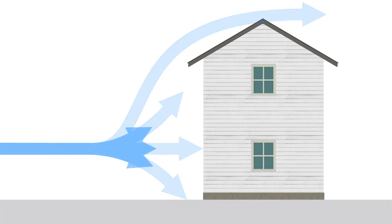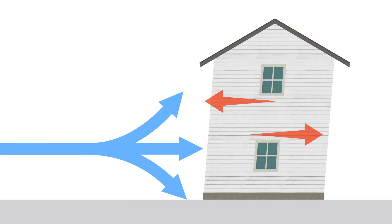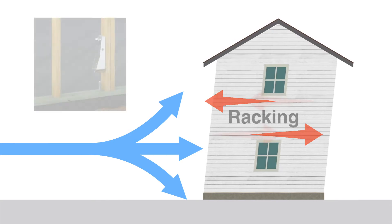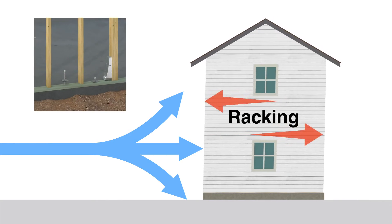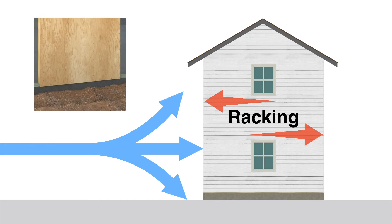Wind also exerts horizontal pressure on the house, which can cause the house to tilt. This is called racking. Racking is resisted by structural sheathing attached to the wall framing.